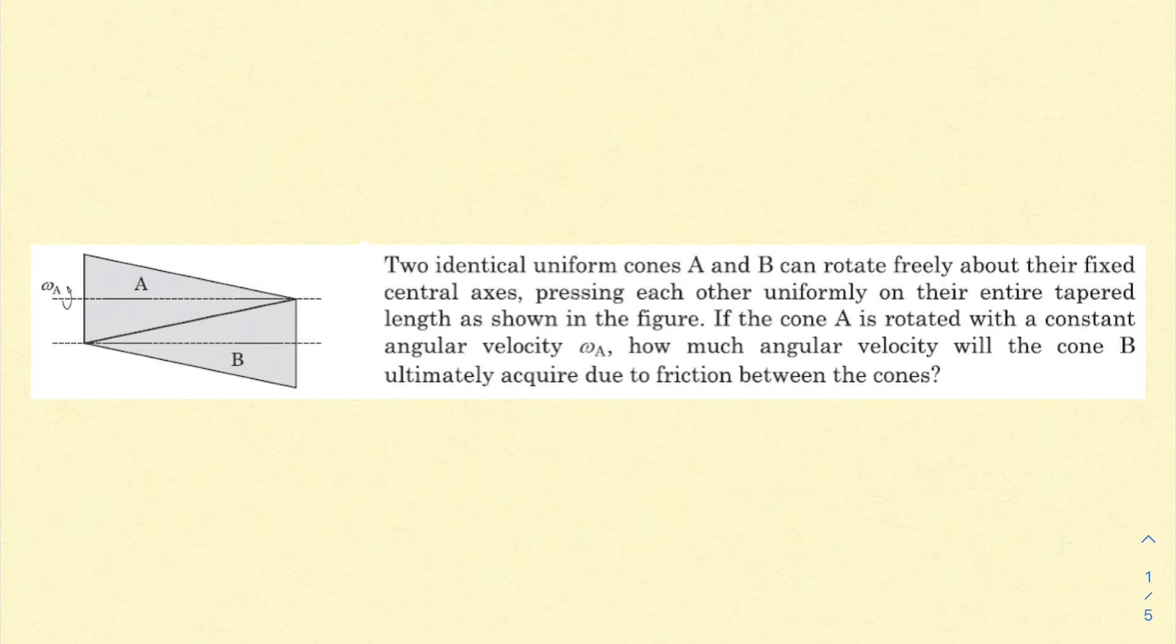In today's question we have two identical uniform cones A and B that can rotate freely about their fixed central axes, pressing each other uniformly on their entire tapered length as shown in the figure.